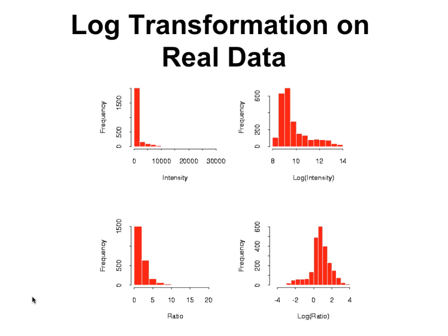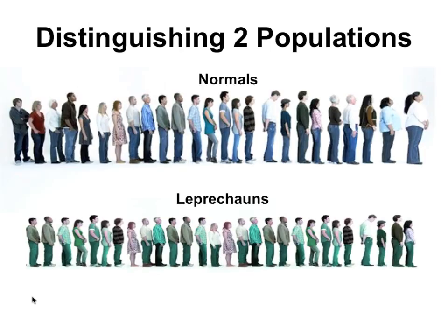So that's univariate statistics — distributions, means, medians, and other things. Why do we want to talk about that? We do this because we want to be able to distinguish between two or more populations. Almost every metabolomics experiment you will do involves trying to distinguish between two populations — something where it's treated vs. not treated, sick vs. healthy, growing under this condition vs. that condition.